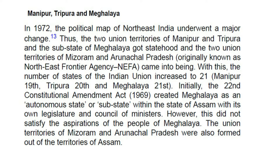Manipur, Tripura and Meghalaya: In 1972, the political map of northeast India underwent a major change. The two union territories of Manipur and Tripura and the sub-state of Meghalaya got statehood, and the two union territories of Mizoram and Arunachal Pradesh, originally known as Northeast Frontier Agency (NFA), came into being. With this, the number of states of the Indian Union increased to 21 — Manipur (19th), Tripura (20th), and Meghalaya (21st). Initially, the 22nd Constitutional Amendment Act, 1969, created Meghalaya as an autonomous state or sub-state within the state of Assam with its own legislature and council of ministers. However, this did not satisfy the aspirations of the people of Meghalaya. The union territories of Mizoram and Arunachal Pradesh were also formed out of the territories of Assam.